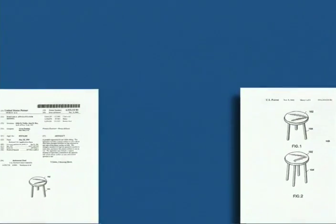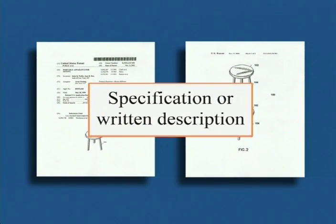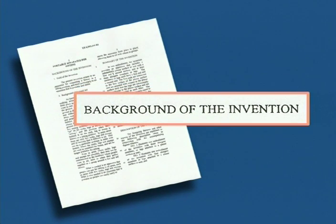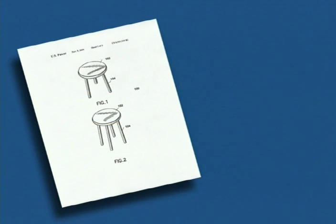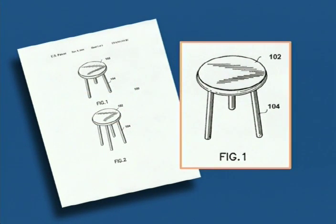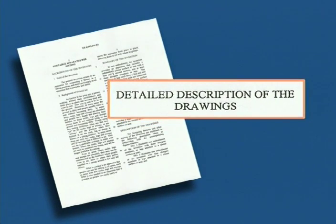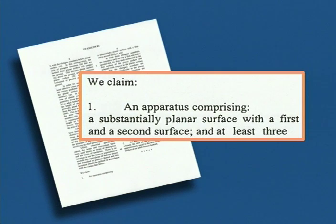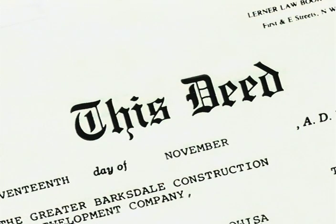The second major part of the patent is what we call the specification or written description — usually the longest part of the patent. It includes an abstract, which is a brief summary of the invention; a background section describing the nature of the problem the invention is supposed to solve; one or more drawings called figures that illustrate various aspects of the invention; and a detailed description of one or more embodiments of the invention. An embodiment is a specific device or method that uses the invention, such as a particular form of light bulb. The third and most important part of the patent is the claims — the numbered paragraphs that appear at the end. The claims are what give the public notice of the boundaries of the invention, similar to the description of property in a deed referring to precise measurements taken on the ground.